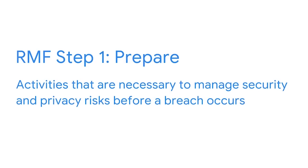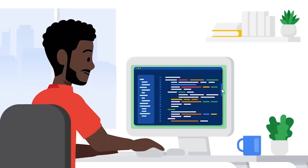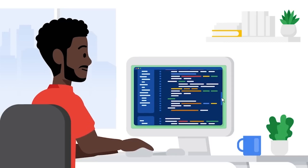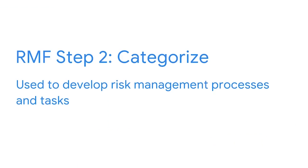Step 1 is Prepare, which refers to activities necessary to manage security and privacy risks before a breach occurs. As an entry-level analyst, you'll likely use this step to monitor for risks and identify controls that can be used to reduce those risks. Step 2 is Categorize, which is used to develop risk management processes and tasks. Security professionals think about how the confidentiality, integrity, and availability of systems and information can be impacted by risk. As an entry-level analyst, you'll need to understand how to follow the processes established by your organization to reduce risks to critical assets such as private customer information.